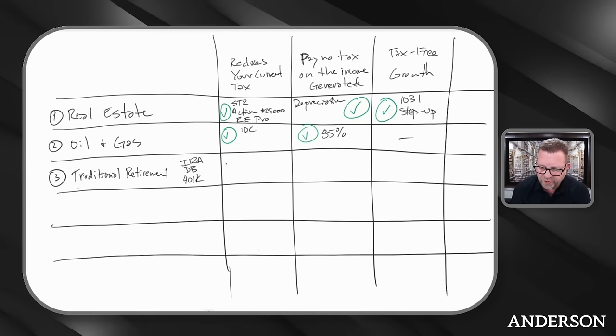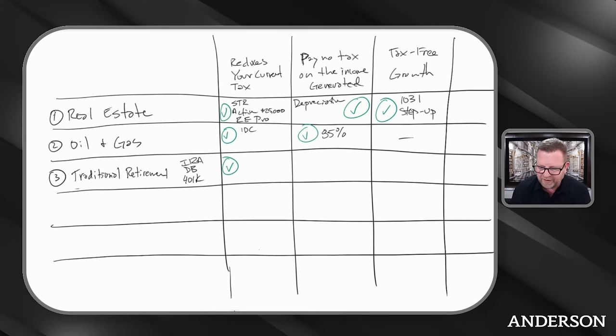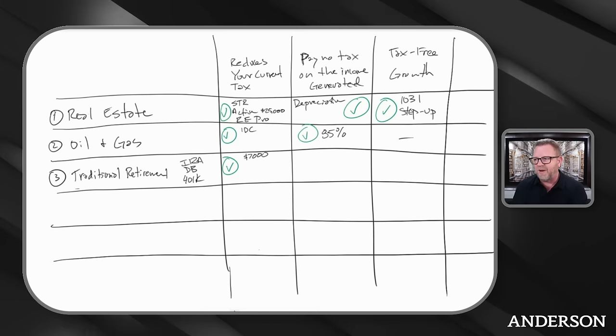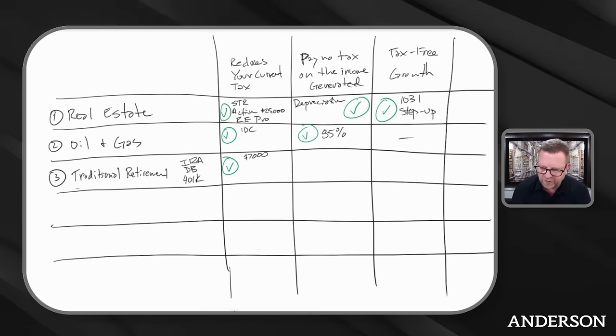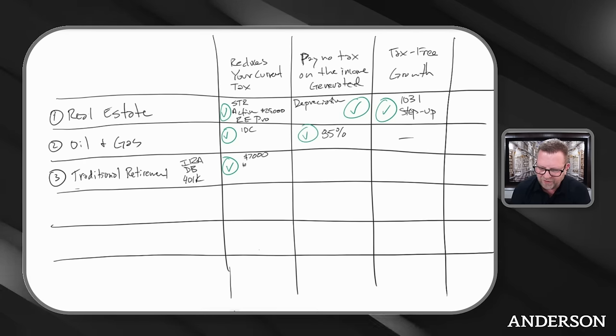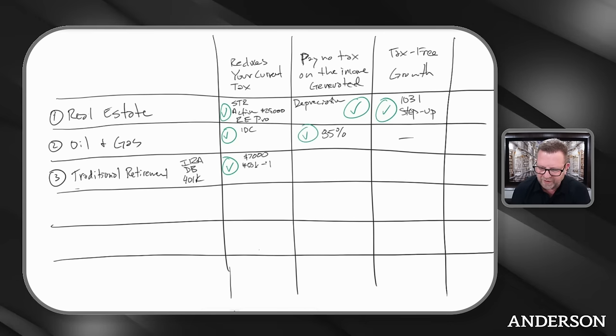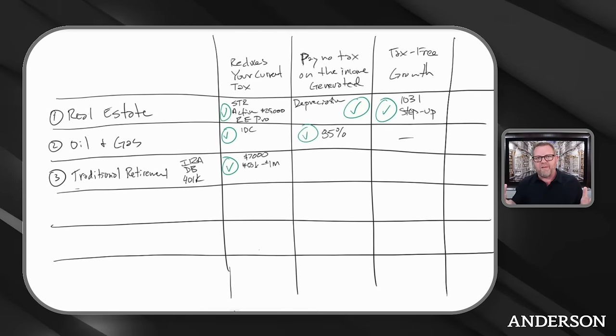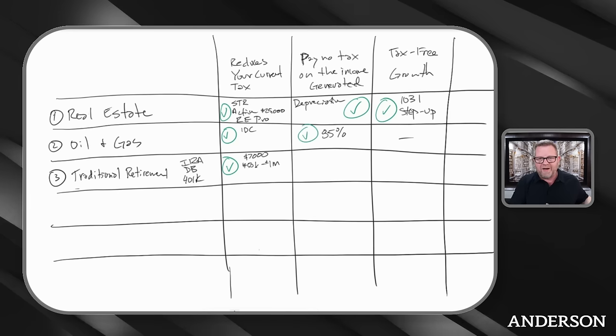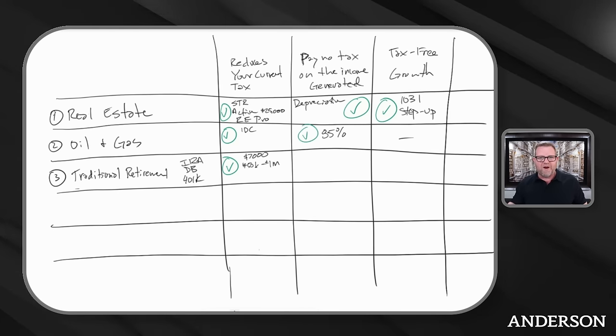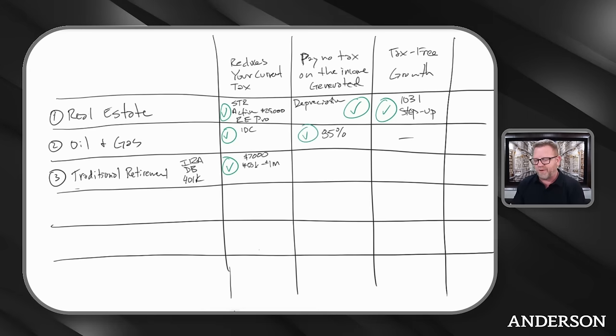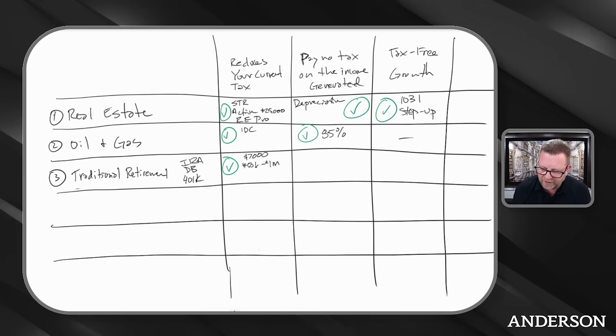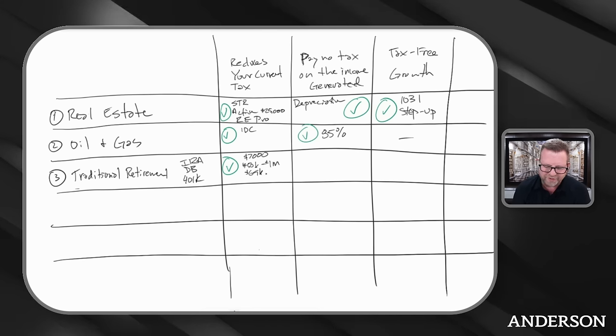When you're doing a traditional plan, other than Roth, you get a deduction. With a typical IRA, you might get $7,000 a year, plus makeup if you're over 50. If you're doing a DB, it could be $50,000 to probably about $1,000,000. If you're doing a 401k, we're looking at $69,000 a year per plan.